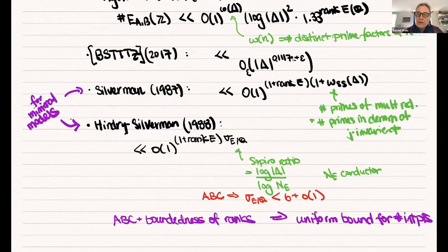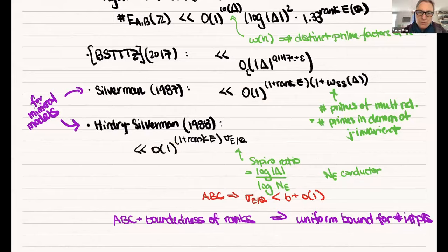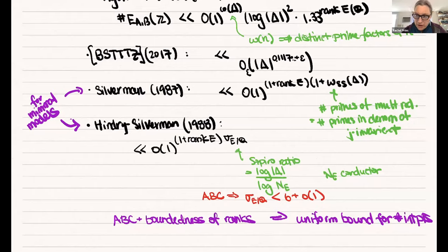There's a question in the chat wondering what the constants depend on — these constants don't depend on anything in these formulas. And there's a question from Bjorn wondering whether the record-setting curve has actually been proven to have rank 25 and no more than 5620 integral points, and how close it gets to these bounds.